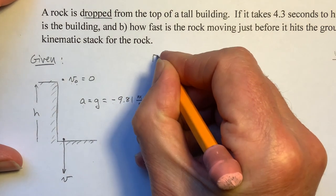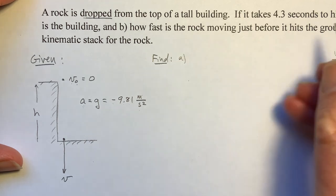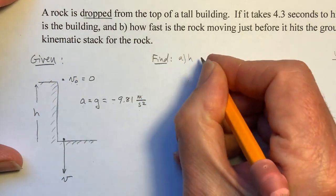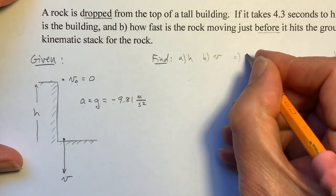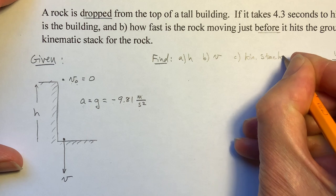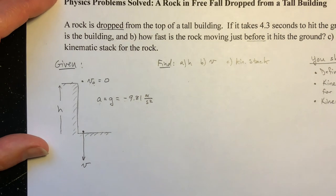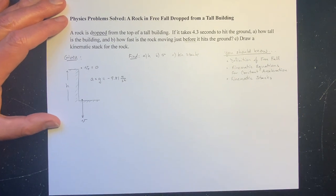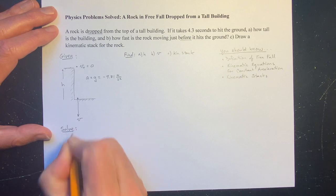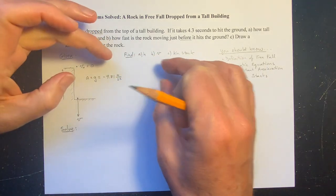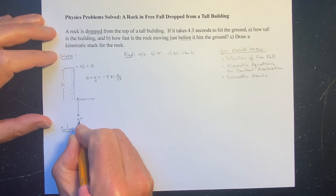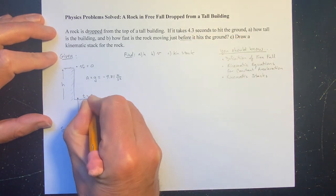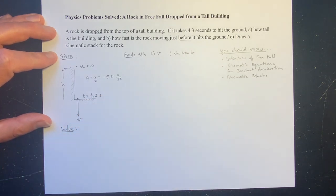What are we trying to find? For part A, how tall is the building — I've called that H. For part B, we want to know how fast it's going just before it hits the ground. And then part C, we want a kinematic stack. Also, I did leave one thing out: when does this final velocity occur? It occurs after 4.3 seconds. So yeah, you can't solve it without that information.